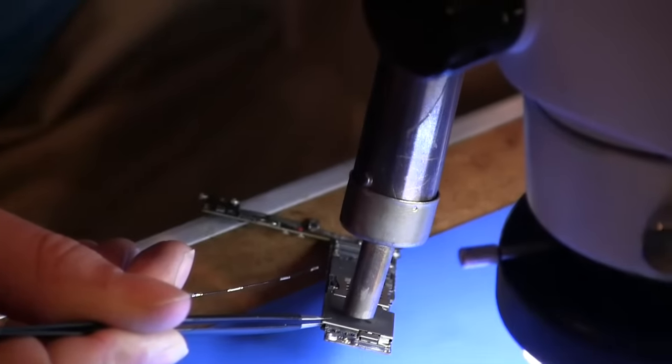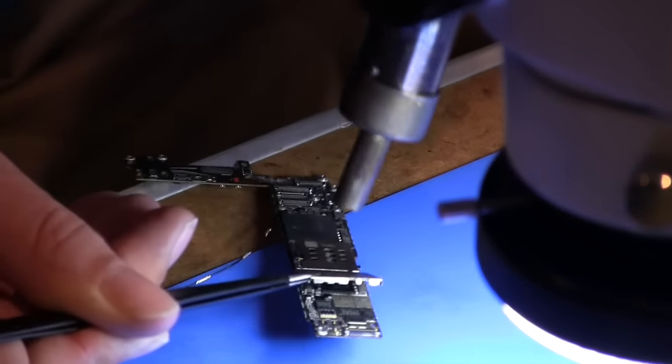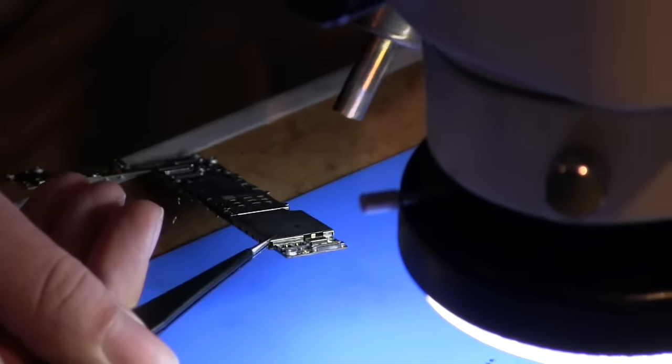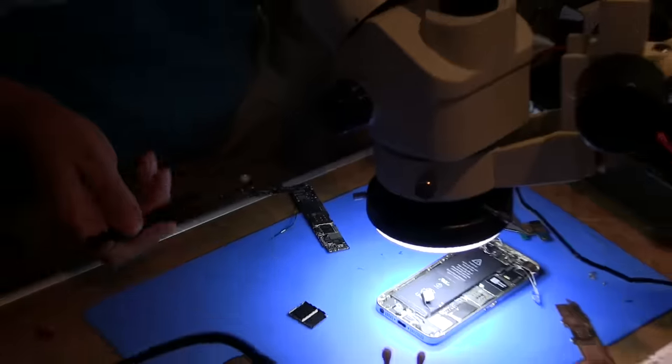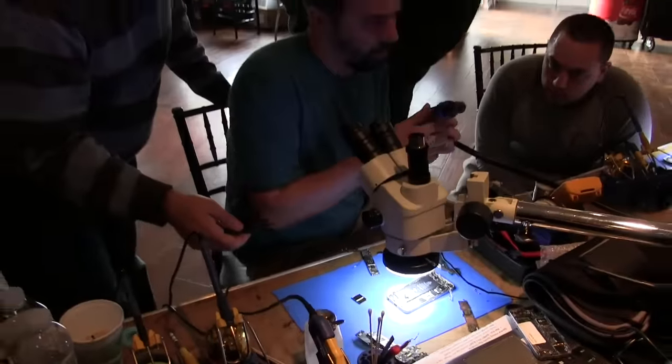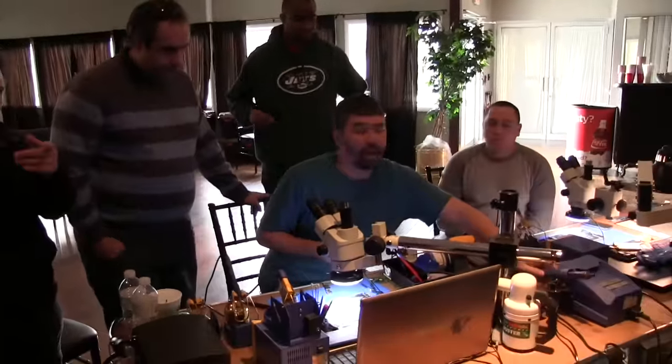And then just put some leaded solder on my tweezer tip and then just touch the pad and kind of leave it like that. I'll wiggle it from there. Boom. All right. So I'm going to remove the one. Shut the cup. All right, class. Back to you.